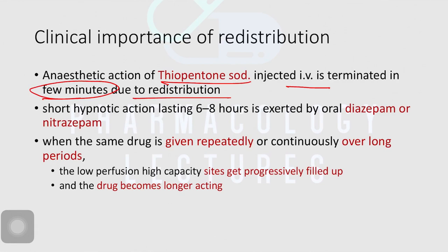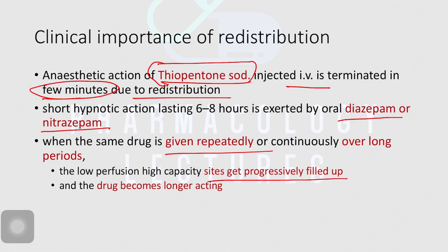There are other drugs acting on the central nervous system called the benzodiazepine group of drugs — for example, diazepam and nitrazepam. They also produce somewhat of redistribution, but thiopentone sodium redistribution is a very classic example. When you give a highly lipid-soluble drug with redistribution characteristics repeatedly, the bulky tissues where it redistributes get saturated. So the drug becomes longer acting. When you give the same drug repeatedly or continuously over a longer period, the sites get progressively filled up, and the drug is no more short acting — it will act for more time because all the redistribution sites are saturated.